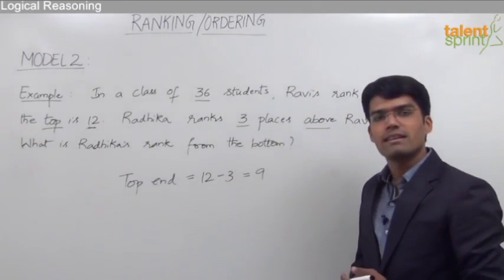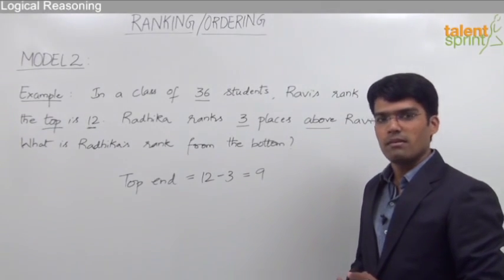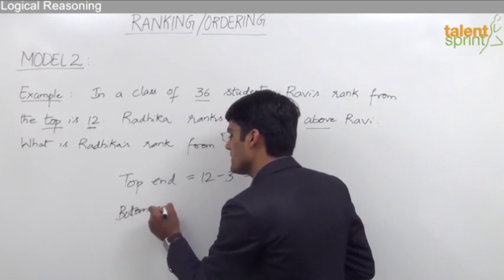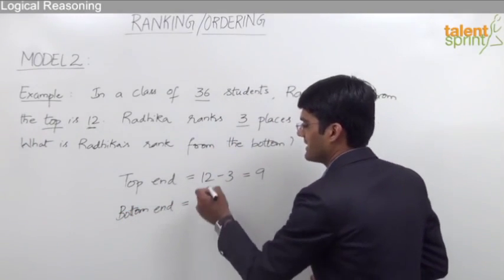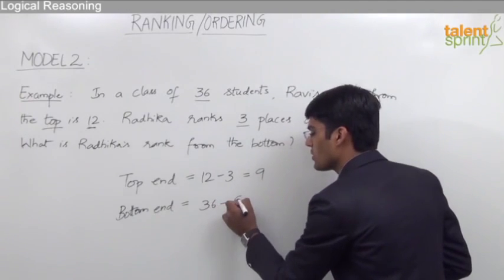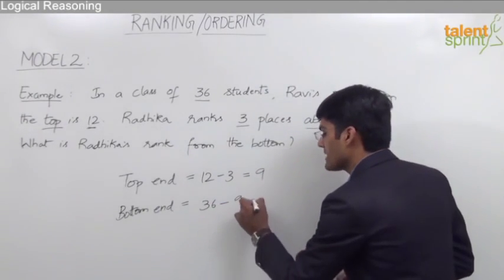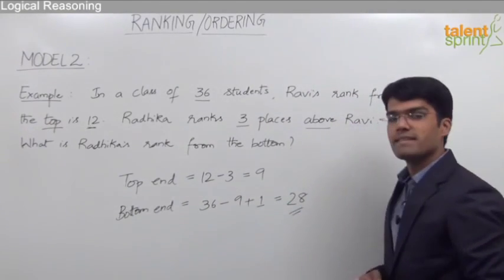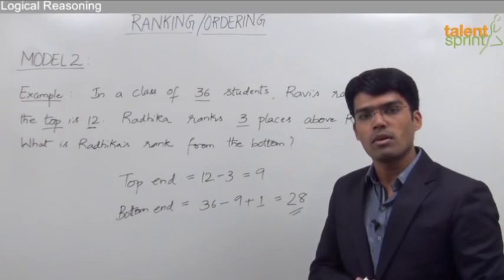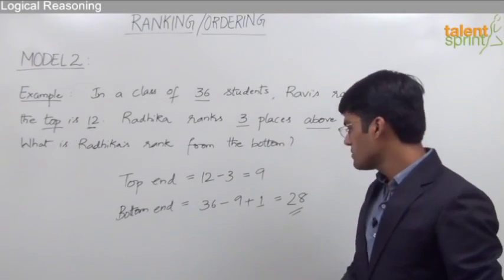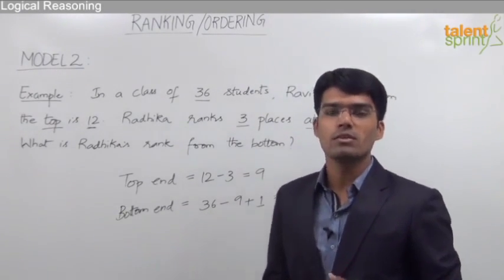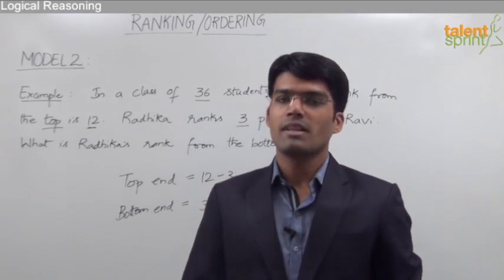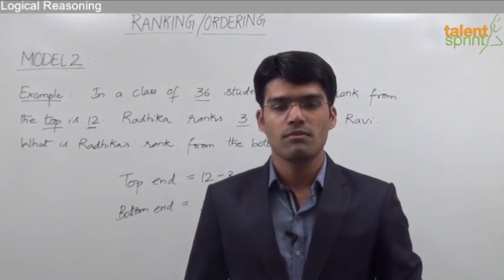Radhika's rank from the top end would be 12 minus 3, that is 9. Now we can find out Radhika's rank from the bottom end: total number of persons (36) minus rank from the top end (9) plus 1, which comes out to be 28. So Radhika's rank from the bottom end in this class is 28. This is how we use the second model to find the position from the other end.